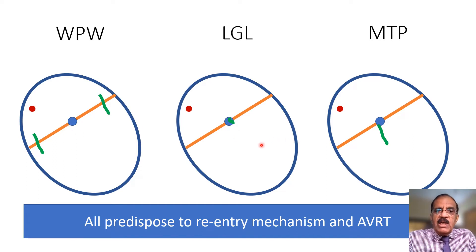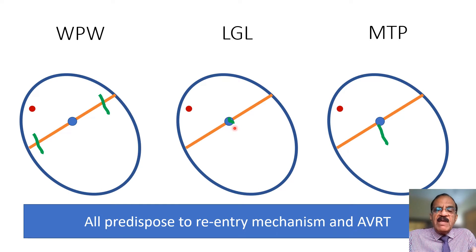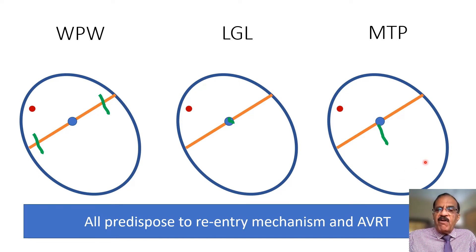In LGL syndrome the only ECG abnormality is a relatively short PR interval, since the AV node normally holds the current — if current slips through quickly, it results in a small PR interval. In Mahaim type, PR interval is normal because the AV node is not affected; it is only after current passes the AV node that ventricular depolarization is affected, so QRS morphology may be abnormal.